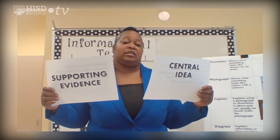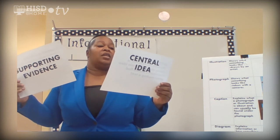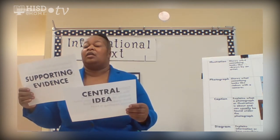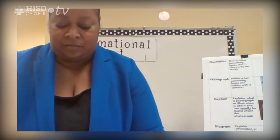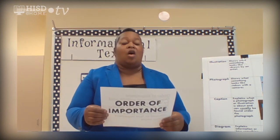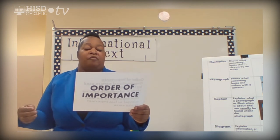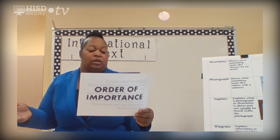Central idea and supporting evidence go hand in hand. The central idea is the main idea that readers should find when reading a text. Supporting evidence consists of details, facts, or ideas that support or say more about the central idea. Order of importance is an organizational pattern used by the author to present ideas moving from the most relevant to the least relevant, or vice versa.